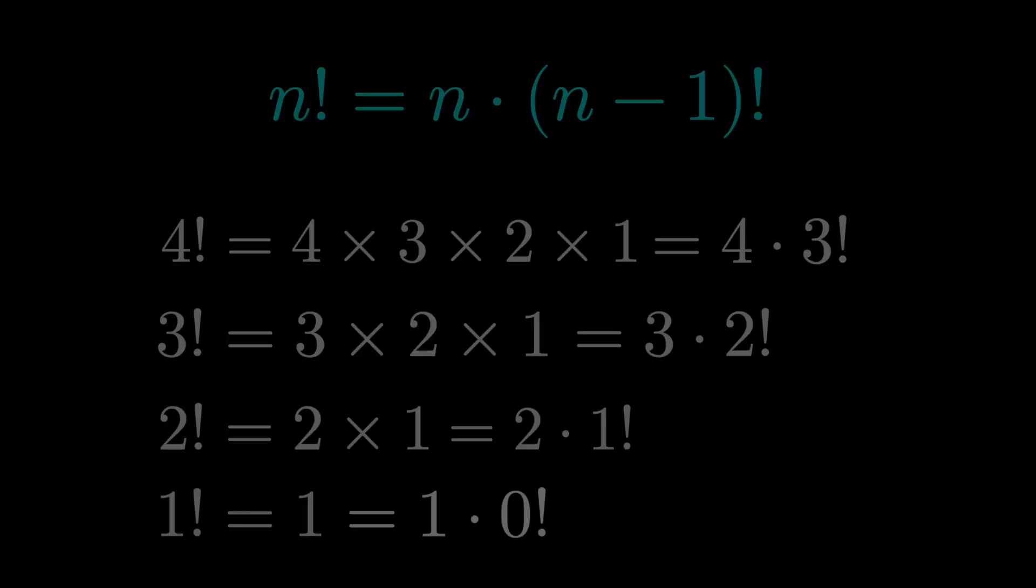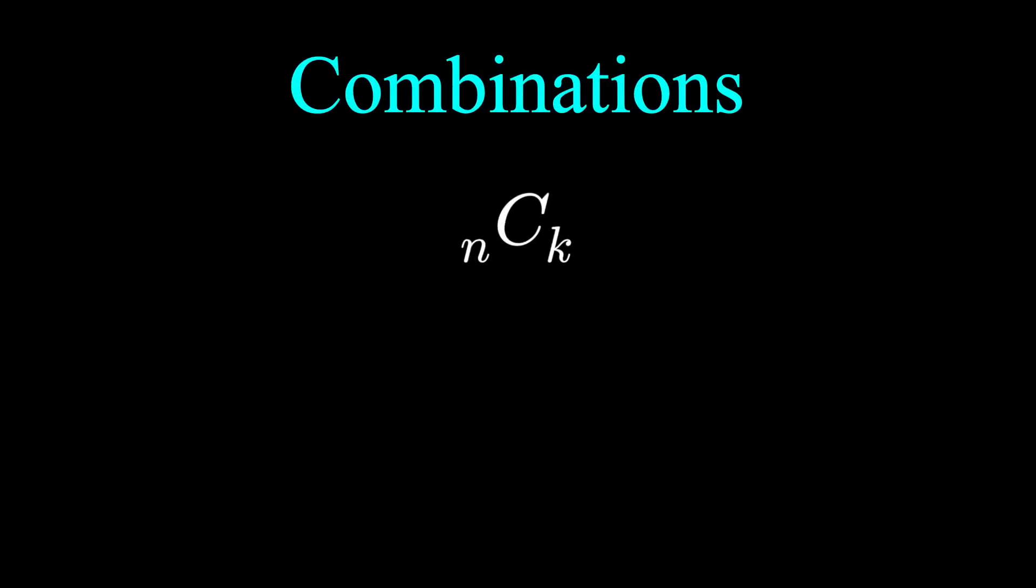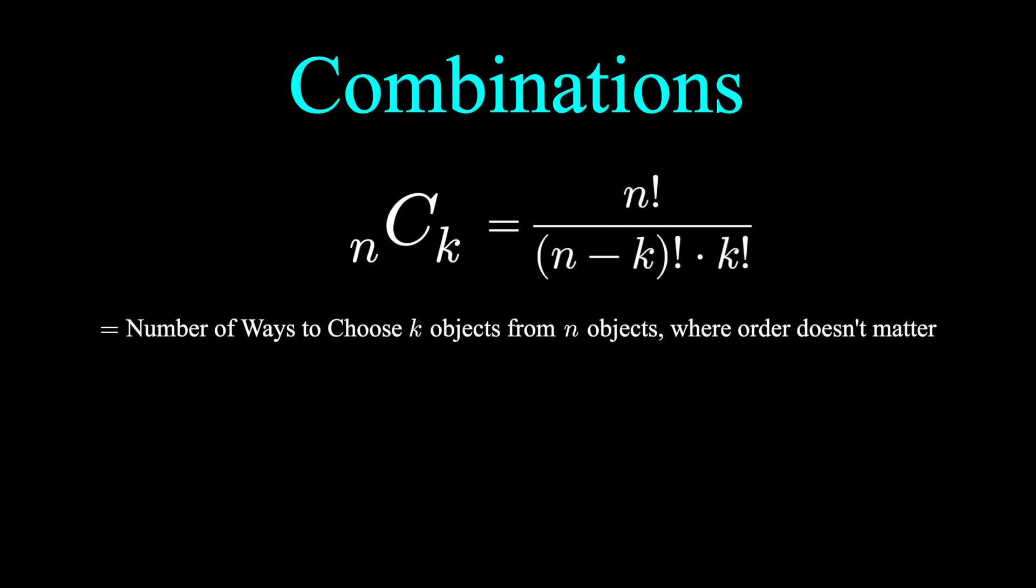How about with combinations? n choose k, as we say, is the number of ways to select k objects from n objects where order doesn't matter. Here's the formula for it.